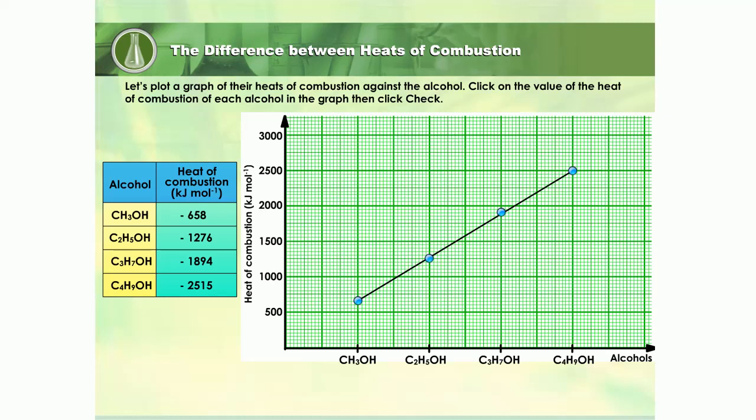Excellent. From the graph, we can see that as the number of carbon and hydrogen atoms increases, the heat of combustion increases. Why do you think this is so? Do you think that it has got to do with the breaking and forming of bonds?